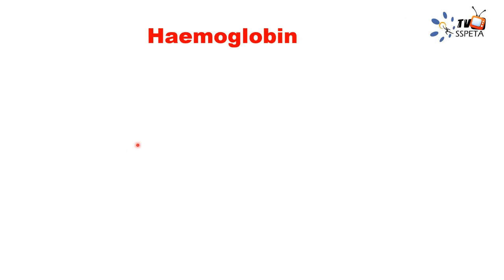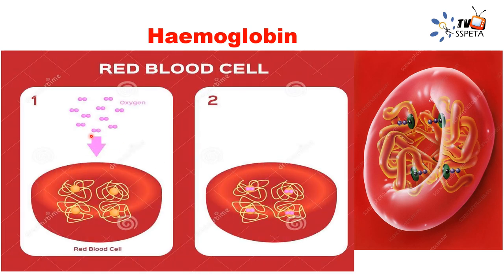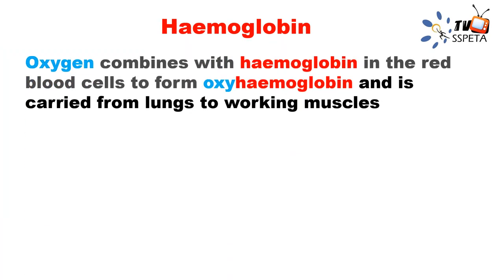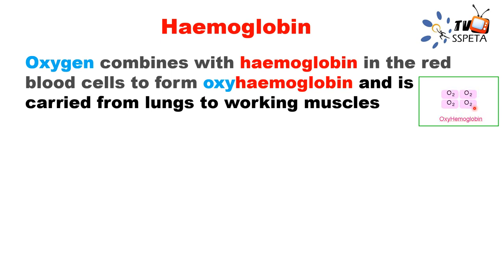To better explain, here is a diagram showing oxygen molecules and hemoglobin with its four heme groups. The oxygen molecules bind to each heme group — you can see the oxygen has been bound to all four heme groups. So one red blood cell can carry four molecules of oxygen. Oxygen combines with hemoglobin to form oxyhemoglobin, which is carried from the lungs to working muscles.